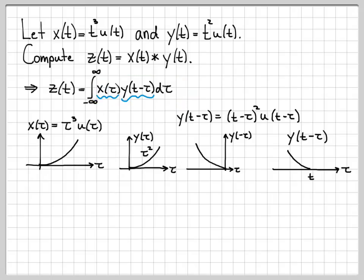So now that we have each of these plotted, we have x of tau plotted, and we have y of t minus tau plotted, we can plug into this integral and actually do the math. And we break it down into the cases as usual, because depending on the value of t, where exactly y of t minus tau is on the tau axis changes the answer. So let's go ahead and break that down into cases. What happens when t is less than or equal to 0?